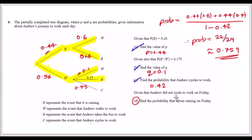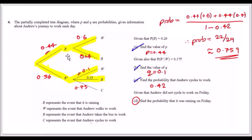Part (d): given Andrew did not cycle to work on Friday, find the probability it was raining. Since P(cycles) = 0.42, P(not cycle) = 0.58, which is the area of interest. Raining (R) occurs on specific branches — ignoring the cycling routes, we take all routes that include R among the walking and biking branches, combine them, and divide by 0.58. The answer simplifies to 22/29.